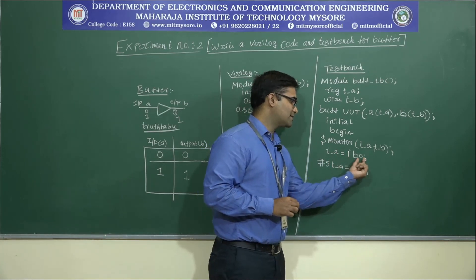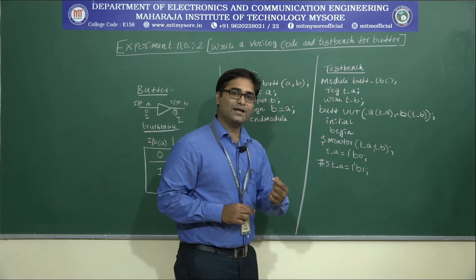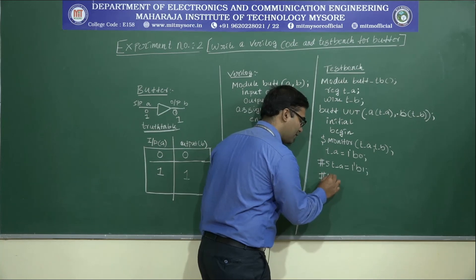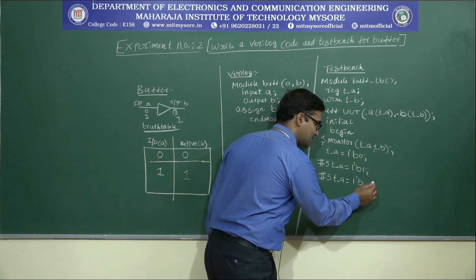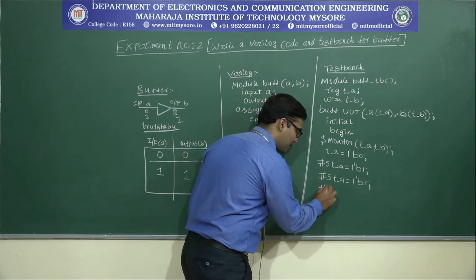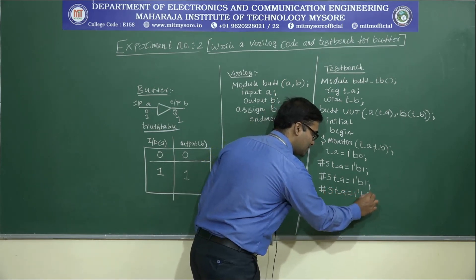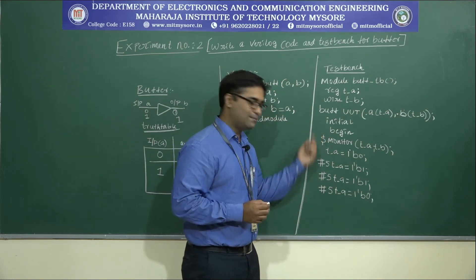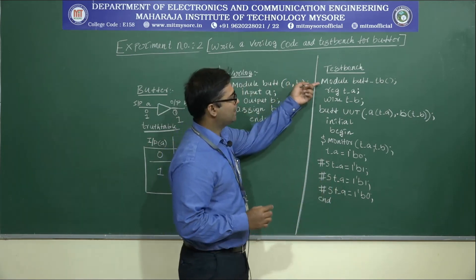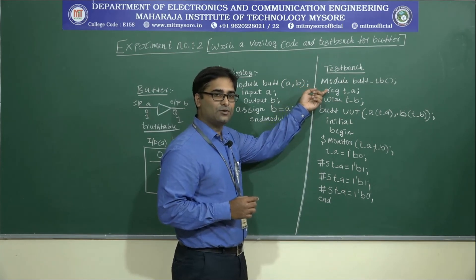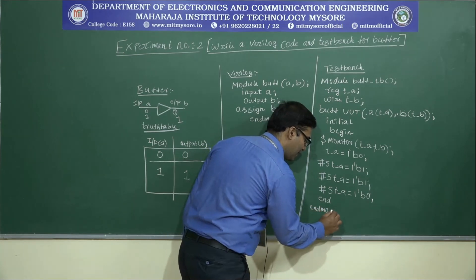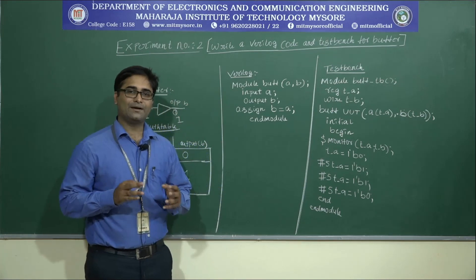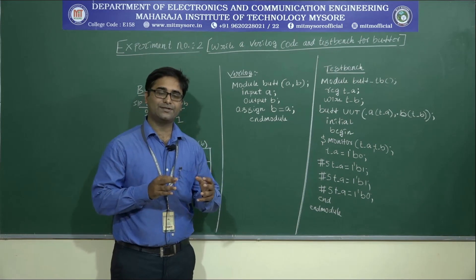For this particular value we are assigning the input as 0, and after simulation the output will also be equal to 0. For the next 5 nanoseconds we define the input as 0 — you can define n number of inputs. We have started the statements with 'initial begin', so we end the particular statement. We also end the module declaration. This is the experiment of how to write a Verilog code and a test bench for the buffer.